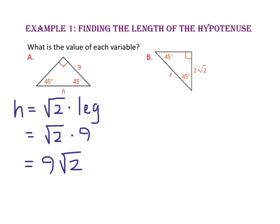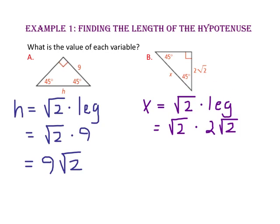For part b, we know the length of the hypotenuse equals the square root of 2 times the length of the leg. Since the length of the leg is 2 times the square root of 2, we substitute that in. The square root of 2 times the square root of 2 is 2, so 2 times 2 gives us 4.